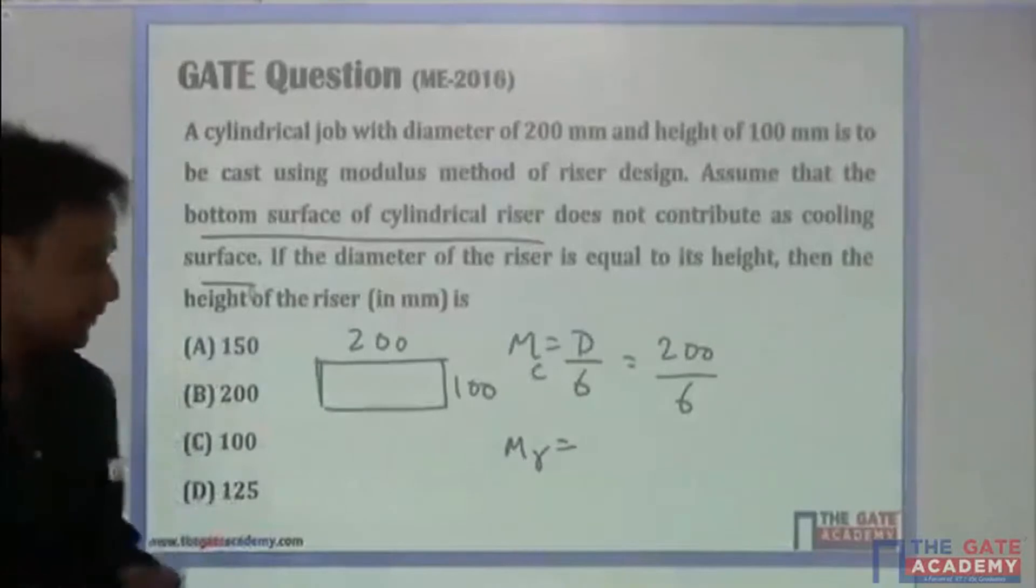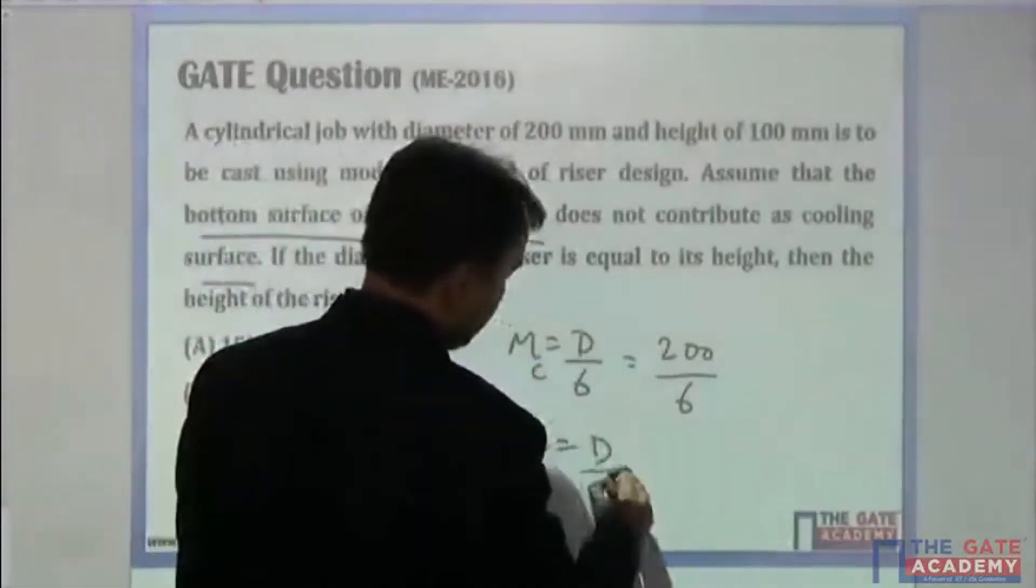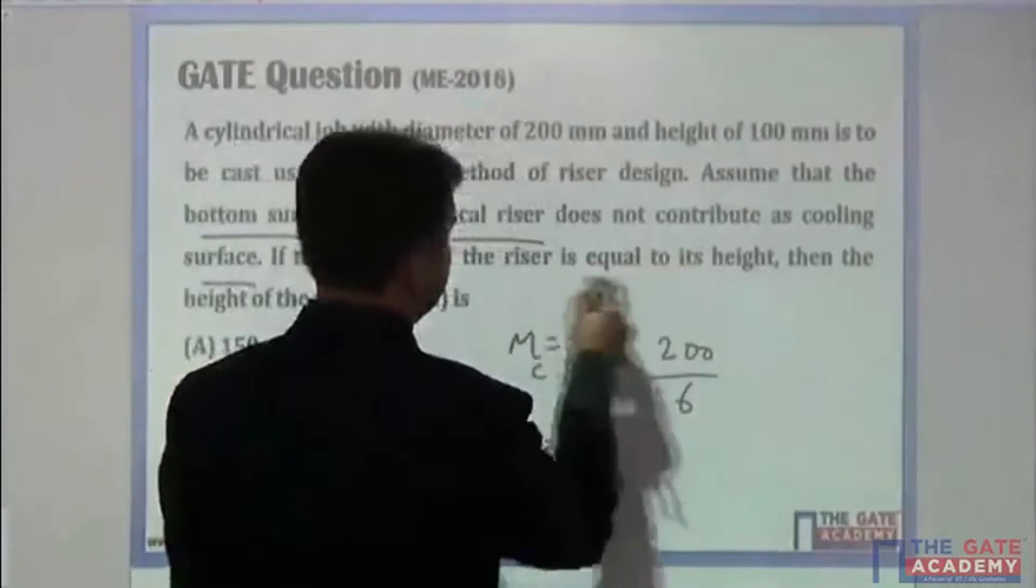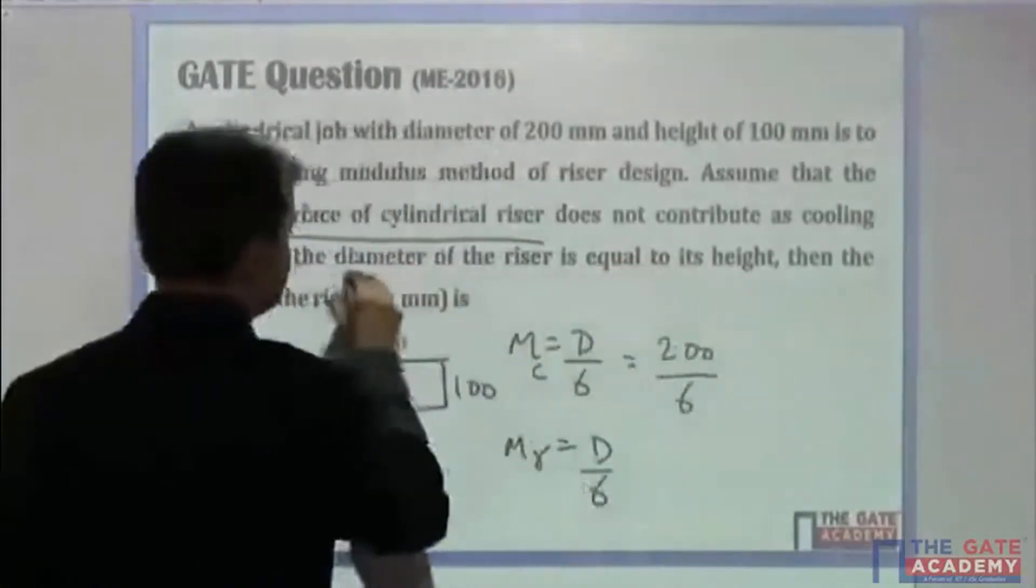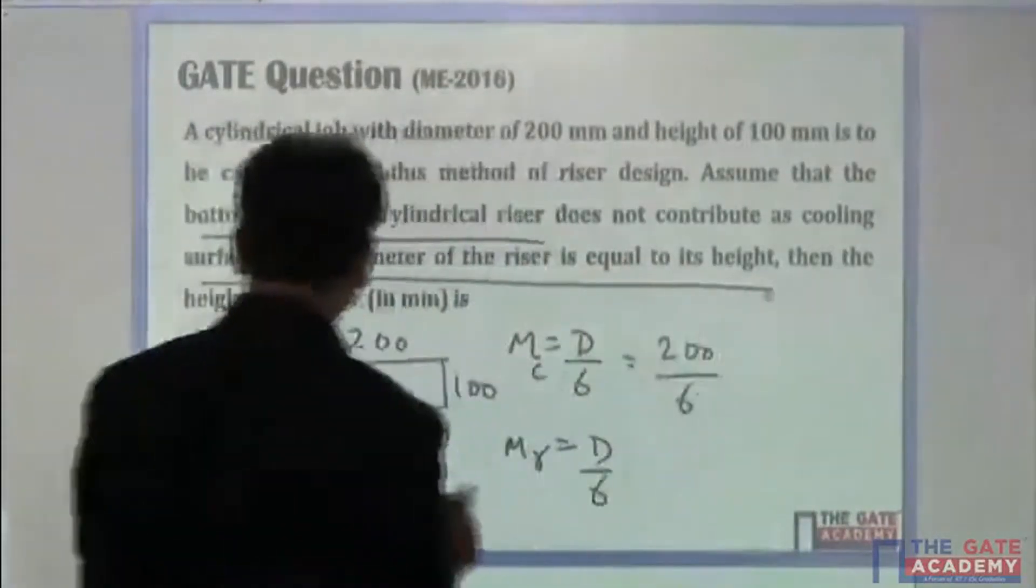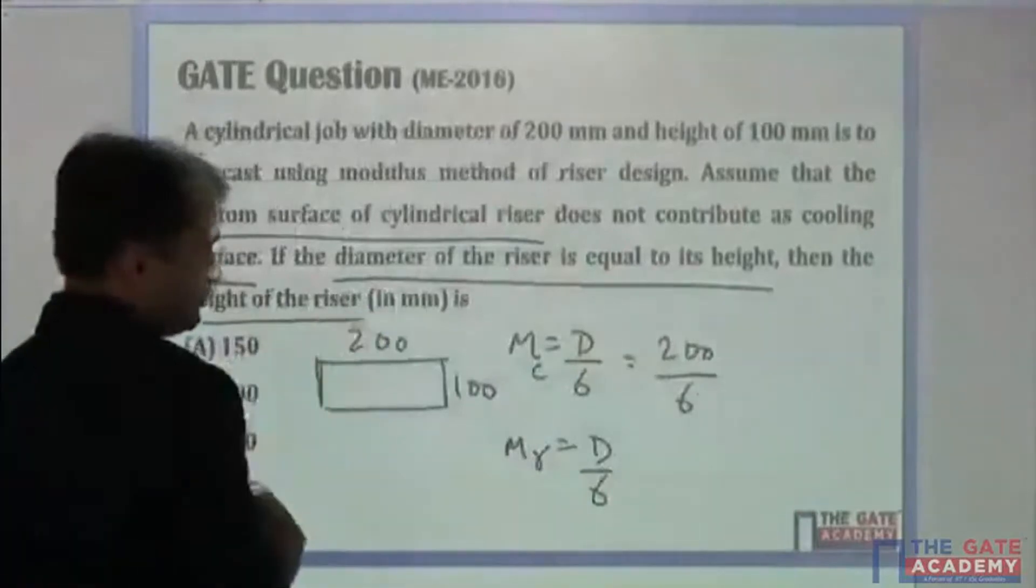So mr will be again d by 6. We know that its diameter is equal to height, diameter of the riser is equal to its height.